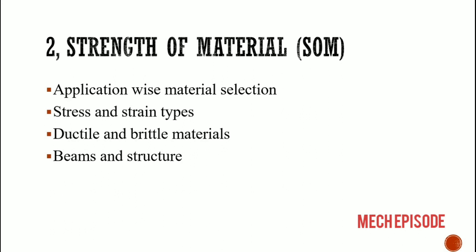The example of ductile material is copper and aluminum, and the example of brittle material is glass. The next topic is beams and structures. The types of beams are fixed beam, cantilever beam, simply supported beam, and continuously supported beam.